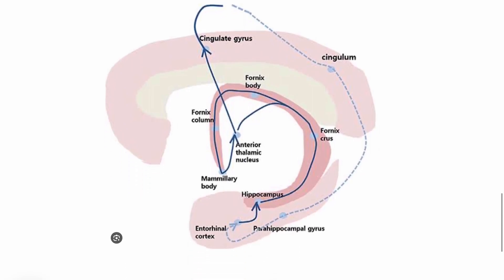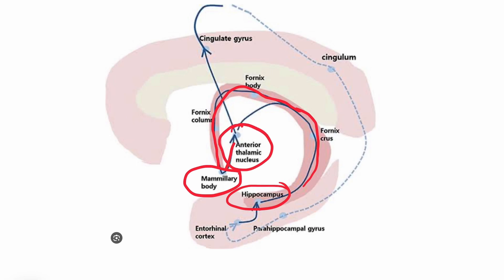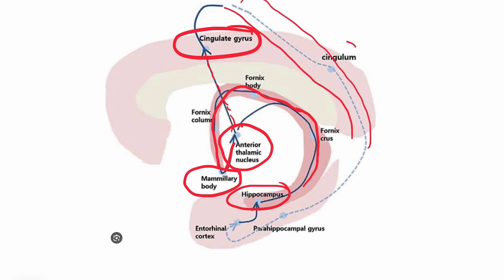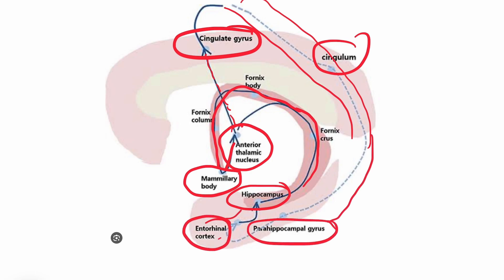Now let me show you one more diagram to make this point more clearly. Starting with the hippocampus, fibers go through the fornix to the mammillary body, which is part of the hypothalamus. Then via the mammillothalamic fibers to the anterior thalamic nuclei, projected by thalamocortical fibers to the cingulate gyrus, then via the cingulum to the parahippocampal gyrus and entorhinal cortex, and finally back to the hippocampus. This circuit is known as the Papez circuit.